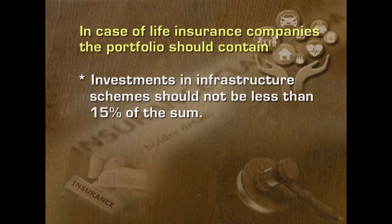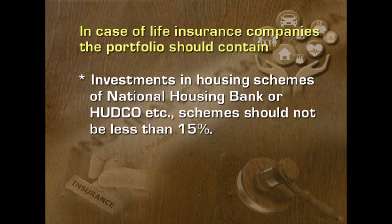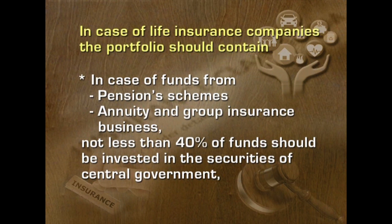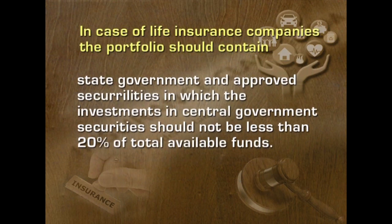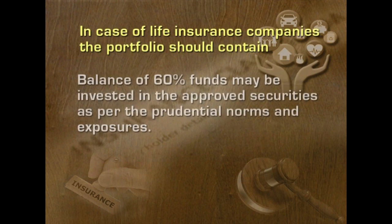Investments in infrastructure schemes should not be less than 50% of the sum. Investment in housing schemes of National Housing Bank or HUDCO schemes should not be less than 15%. In case of funds from pension schemes, annuity and group insurance business, not less than 40% of the funds should be invested in securities of the central government, state government and approved securities, in which the investment in central government should not be less than 20% of total available funds. The balance of 60% of funds may be invested in approved securities as per prudential norms and exposures.